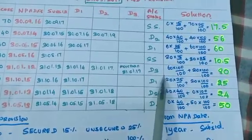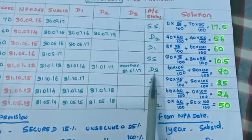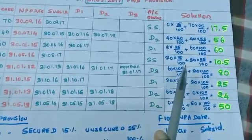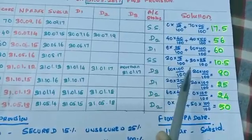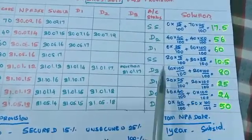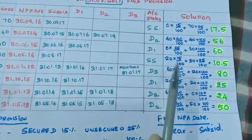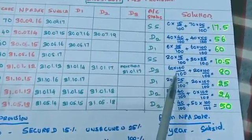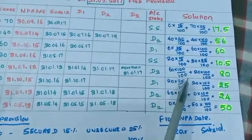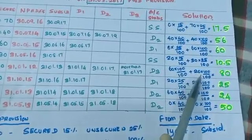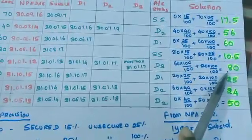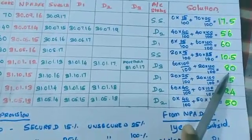The next account is A5 in D3 category. For D3, both secured portion and unsecured portion require 100% provision. So 60 × 100% plus 20 × 100% equals 80.